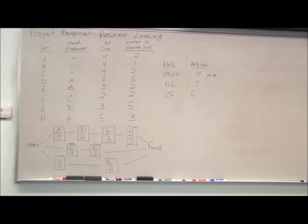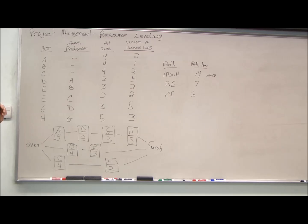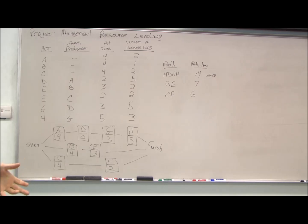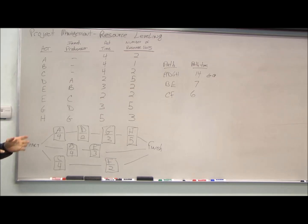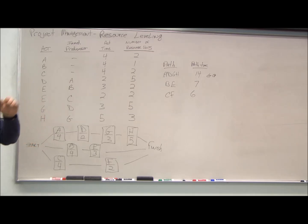Today we're going to look at resource leveling, part of project management per CPM. Companies need to manage their resources. Resources can be vehicles — how many trucks do you need — it could be machinery — how many lines do you need. Most important, it could be people. How many people do you need to complete a job? Not all activities are created equal. You'll have peaks and valleys of when you need machinery and people.